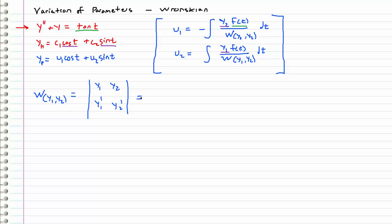Let's start by evaluating the Wronskian. y1 is cosine t, y2 is sine t, and their derivatives are negative sine t and cosine t respectively. When we take the determinant we get cosine squared t plus sine squared t, which is equal to 1 from that common trig identity.